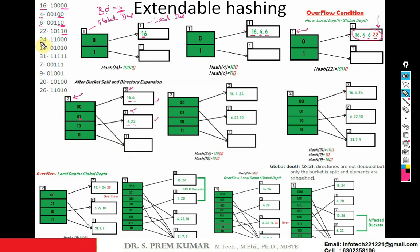Now I would like to insert 24. The least significant bit of 24 is 0, and the last two significant bits are 00, so 24 is placed in the 00 bucket. Next is 10 — its last two significant bits are 10, so 10 is placed in the 10 bucket. Now I am taking 31 — the last two significant bits are 11, so 31 is to be placed in the 11 bucket.